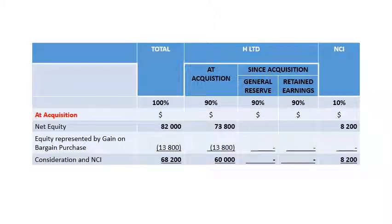In the analysis of equity for Scenario 2, the net equity figures are the same as above. H Limited's 90% share is $73,800 and NCI is measured as 10% of net assets — $8,200. The consideration was only $60,000, meaning we paid less by $13,800 — we made a bargain purchase. However, before recognizing this gain we must ensure that the assets are not overvalued and are stated at fair values, otherwise the gain would be artificial.